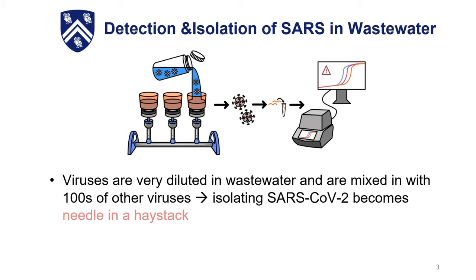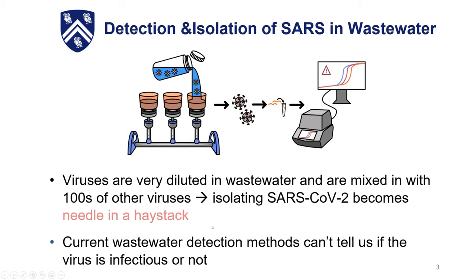When we think about how to isolate SARS from that, it becomes a needle-in-a-haystack type of problem. We can use a very specific method — PCR — to detect only the SARS from this complicated sample. But unfortunately, PCR cannot tell us whether or not the virus is infectious; it just tells us whether or not it's there.